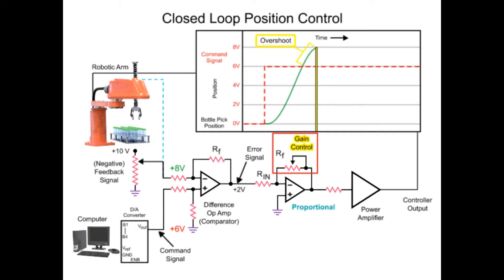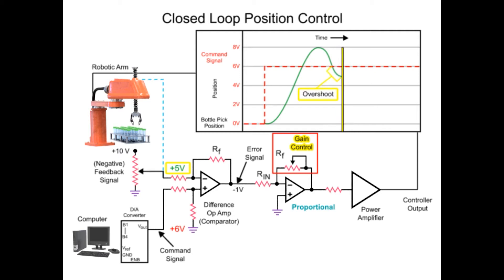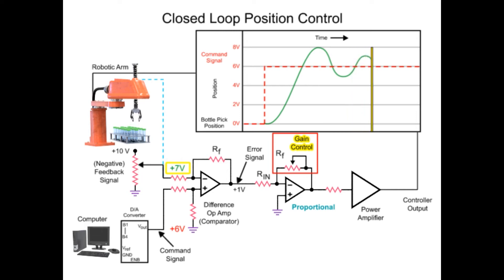When this occurs, the feedback signal is greater than the command signal. The op-amp reacts by changing polarity from positive to negative, which results in reverse rotation of the arm motor to go back to the desired position. Although with high gain, the overshoot is repeated again in the opposite direction, and the overshoot of the target position repeats until the robotic arm motor stabilizes.